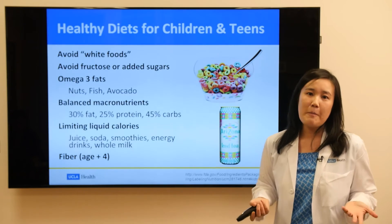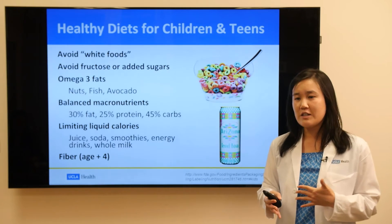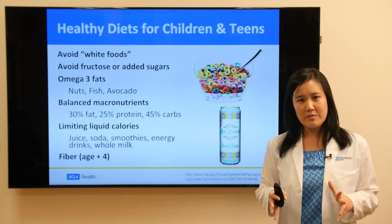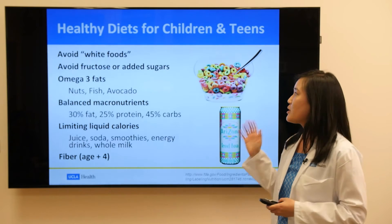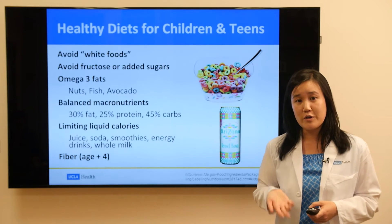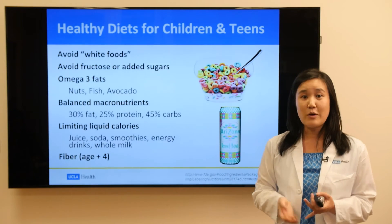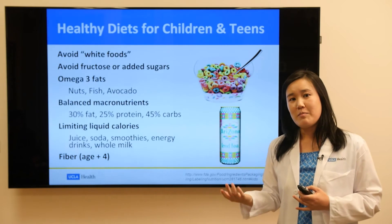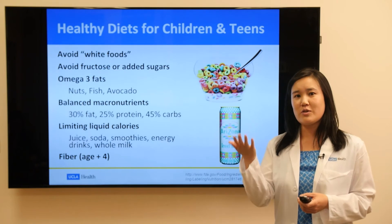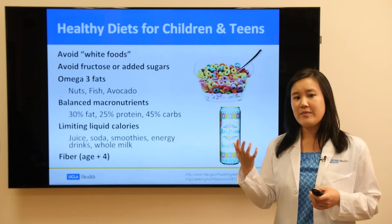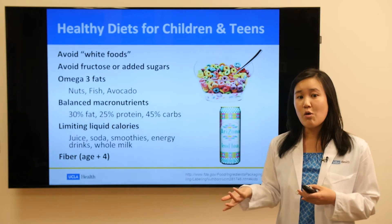Besides medications, the mainstay of treatment right now is healthy lifestyle habits, diet change, and exercise. I tell patients to avoid white foods — white rice, white breads, mashed potatoes — they tend to have a high glycemic index. A food with high glycemic index will increase glucose levels in the body, leading to a surge of insulin. Comparing whole wheat bread to white bread, it is better to eat the whole wheat bread.